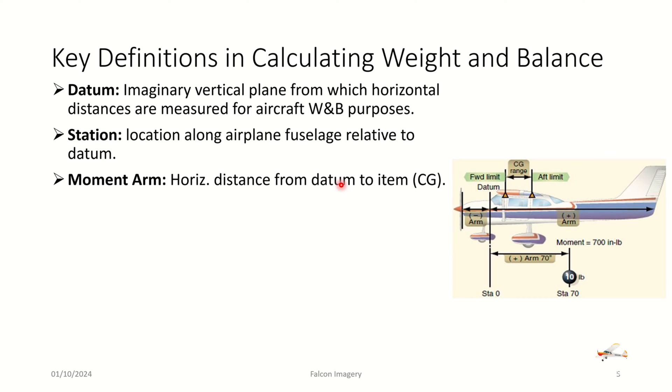The moment arm is the horizontal distance from the datum point to any one of those stations. And the moment is the item weight multiplied by its moment arm. So if we, for example, see a 10-pound weight at station 70, the moment is the multiplication of the arm length, 70 inches, times 10, to give us 700 inch-pounds in this example.